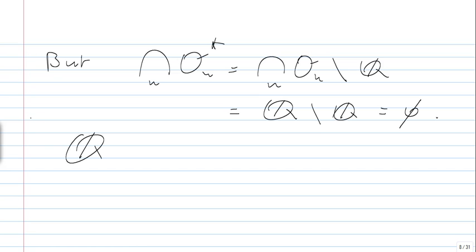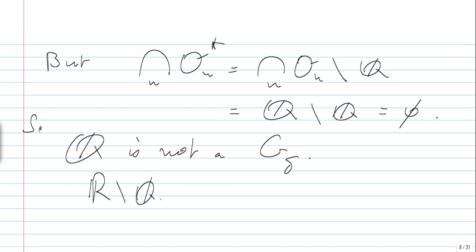So Q is not a G-delta. And if Q is not a G-delta, the complement will not be an F-sigma, meaning that the irrationals are not an F-sigma set. The irrationals are a G-delta. So Q is not a G-delta. Thank you.